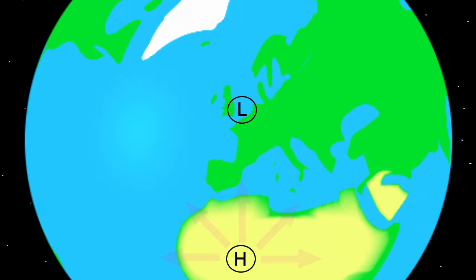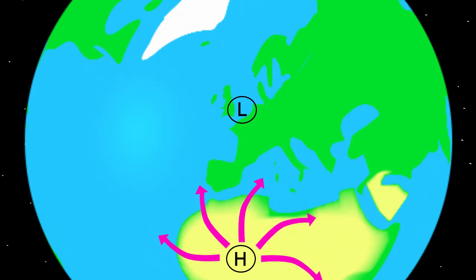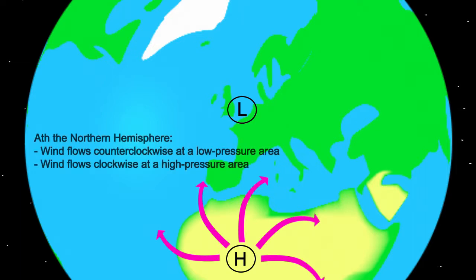This is precisely a satellite image of a hurricane, which is actually one large low pressure area that can show this well. In a high pressure area in the northern hemisphere the situation is reversed. Air wants to leave the high pressure area and gets a deviation to the right. The air rotates clockwise around the high pressure area and leaves the high pressure area only slowly. So remember that in the northern hemisphere the air around the low pressure area flows counterclockwise and around the high pressure area clockwise.